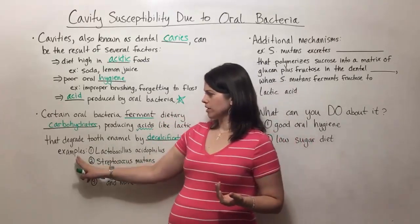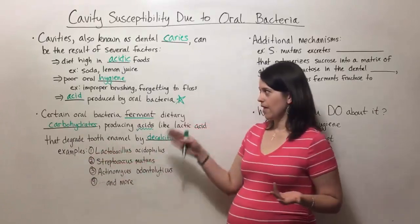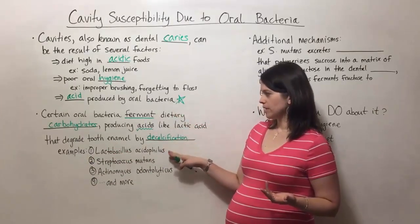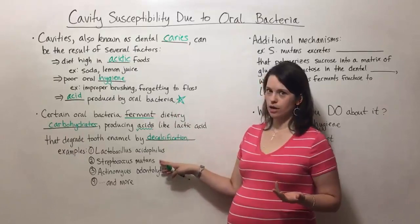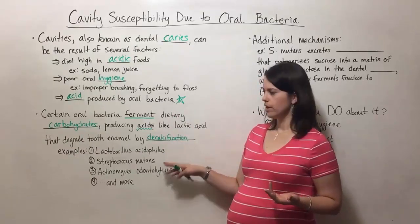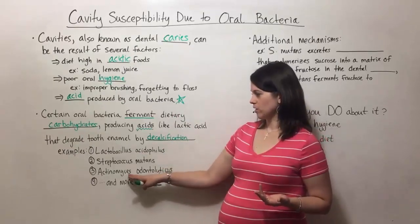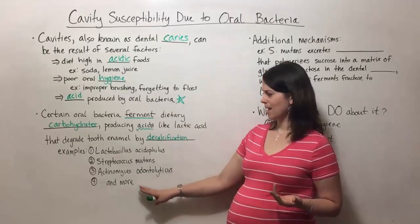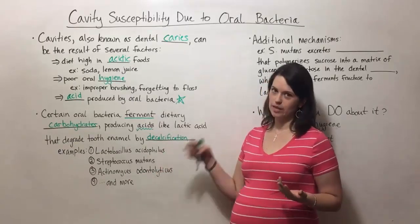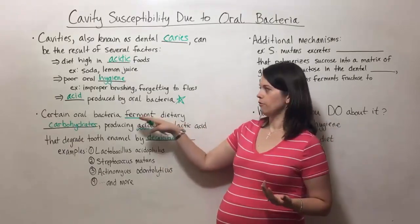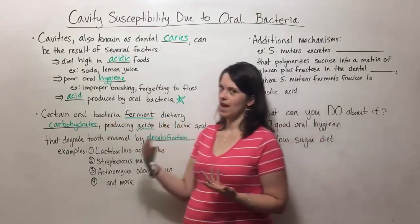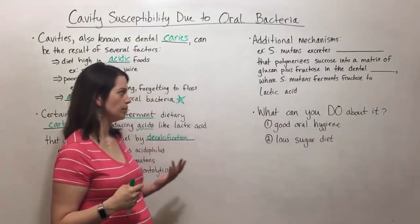There are several examples of bacteria that can carry out this process. Lactobacillus acidophilus and Streptococcus mutans are the two we hear about most often. There's also Actinomyces odontolyticus and many more — various types of bacteria capable of fermenting sugars in your mouth and producing the acids that break down your tooth enamel.